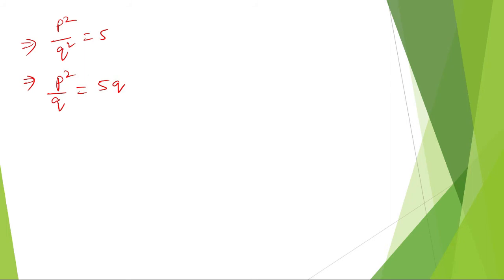Now, this equality can be sustained only if Q is equal to 1. So when Q is equal to 1, P square is equal to 5.